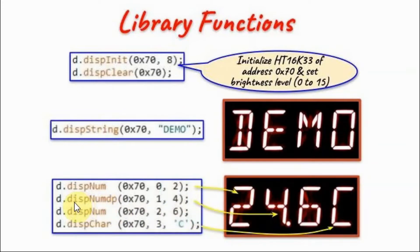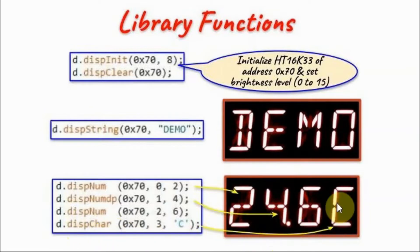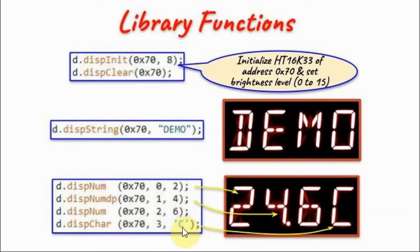Next, we have function display number with decimal point, which is similar to function display number, but it will also show the decimal point after the number. Next, we have function display character, which will display an alphanumeric character on the selected digit. It has three arguments: the address of the device, the digit position, and the character to be displayed in single quotation marks.